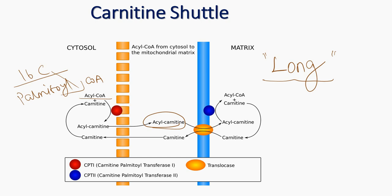There is an enzyme CPT-2, and the first enzyme is CPT-1. CPT-1 and CPT-2 are carnitine palmitoyltransferases. CPT-1 transfers carnitine to palmitoyl-CoA, and CPT-2 does the reverse — it removes carnitine from palmitoyl-CoA.